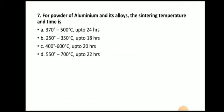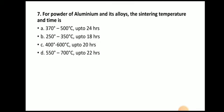Next question: For powder of aluminium and its alloys, what is the sintering temperature and time? The answer is 370°C to 500°C for up to 24 hours.